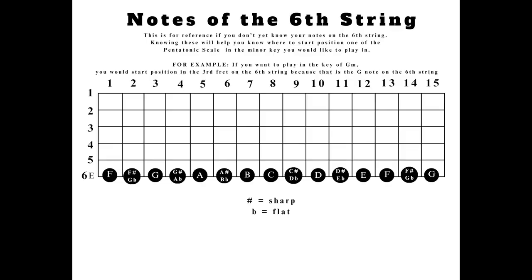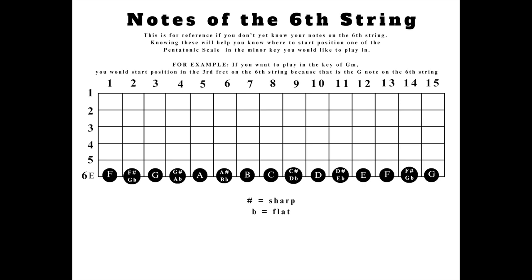If you want to do the F minor pentatonic scale, you're in fret one. F sharp or G flat minor is fret two. G minor is fret three. G sharp or A flat minor is in the fourth fret. A minor in the fifth — you already know. A sharp or B flat minor is in the sixth. B minor is in the seventh. B does not have a sharp, so we go to C right from B, then C sharp or D flat in the ninth fret, D in the tenth fret, D sharp or E flat in the eleventh fret, and E in the twelfth fret.